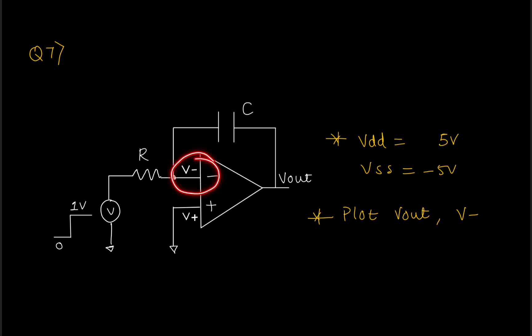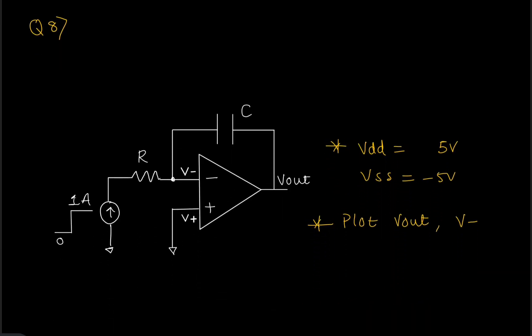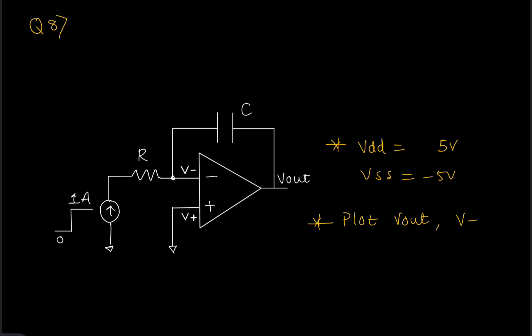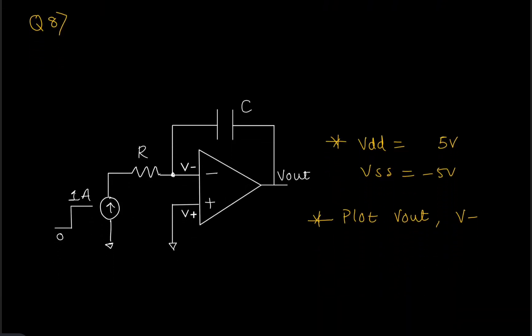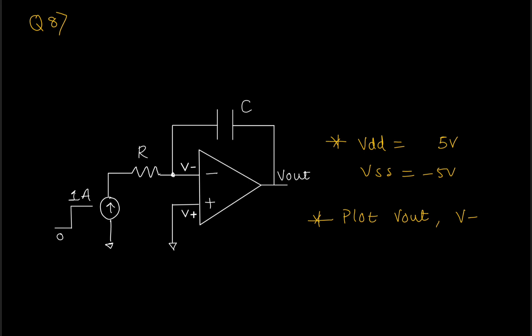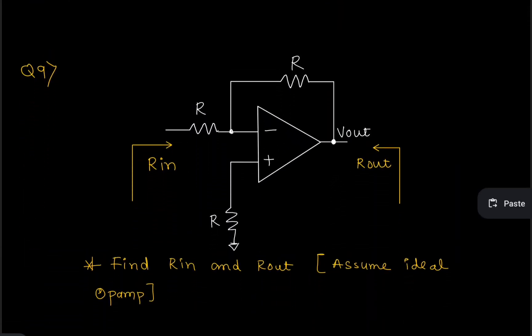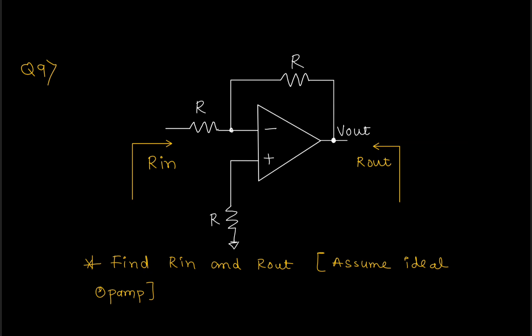Then they told me to plot V-minus, which was something different for me. After some inputs from them I reached the answer. Then they gave me a step current input and asked me to plot V-out and the inverting voltage. This interview lasted around one hour and forty minutes, so there were many questions. Next they asked me to calculate the input resistance and output resistance, assuming all op-amp parameters are ideal.